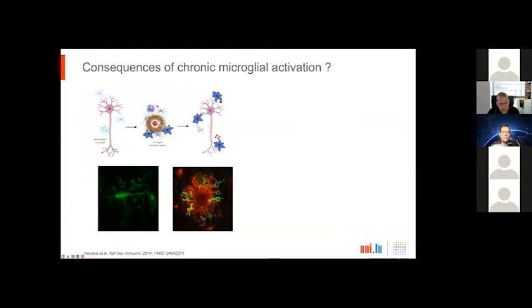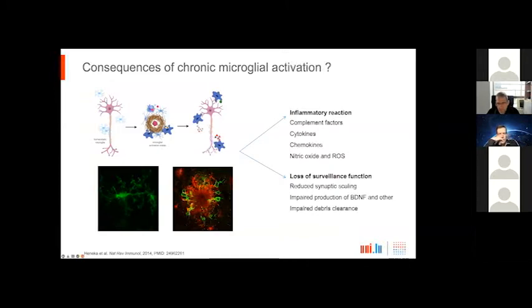If microglia cells undergo activation, in this example here at a plaque deposit, you see that they undergo massive morphological change. They retract their processes, which otherwise span over the immediate environment and scan this constantly. This process retraction is also characterizing the stage of the cell which leads to the release of complement factors, cytokines, chemokines, nitric oxide, and reactive oxygen species. At the same time, these cells stop doing a lot of sensible things for our brain, including the reduction of synaptic scaling, reduced production of neurotrophic factors including BDNF, and they are less efficient in clearing debris from the brain.